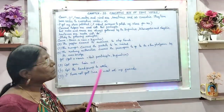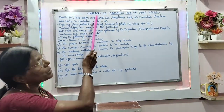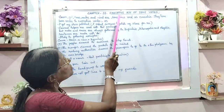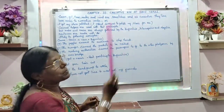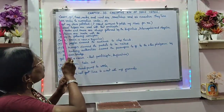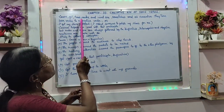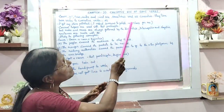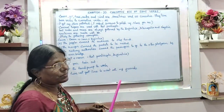Welcome all to my grammar class. Now we are going to have chapter 33: causative use of some words. Cause, get, have, make and mind are sometimes used as causative.